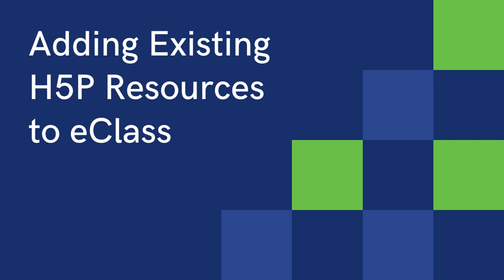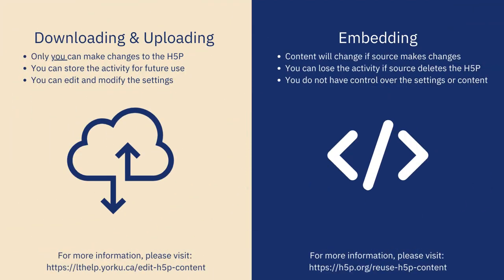In this short video, I will walk you through the process of adding existing H5P content to your eClass course. There are two ways you can add existing H5P to your eClass site. The first option is to download the H5P of interest and upload the file to your eClass course content bank. This option allows you to edit and adapt the H5P to better meet your course needs.